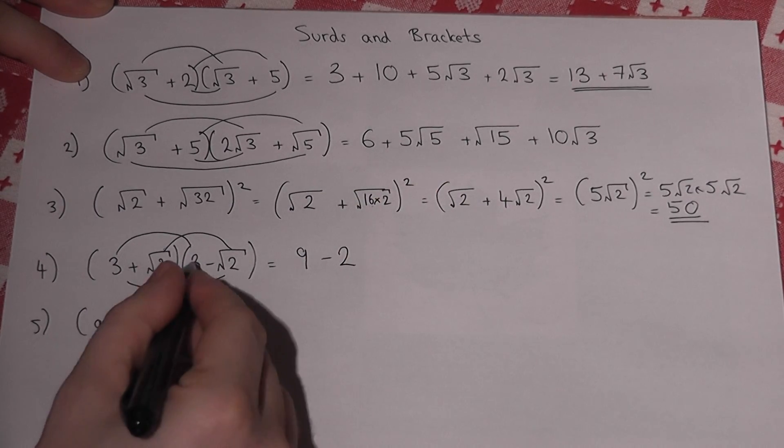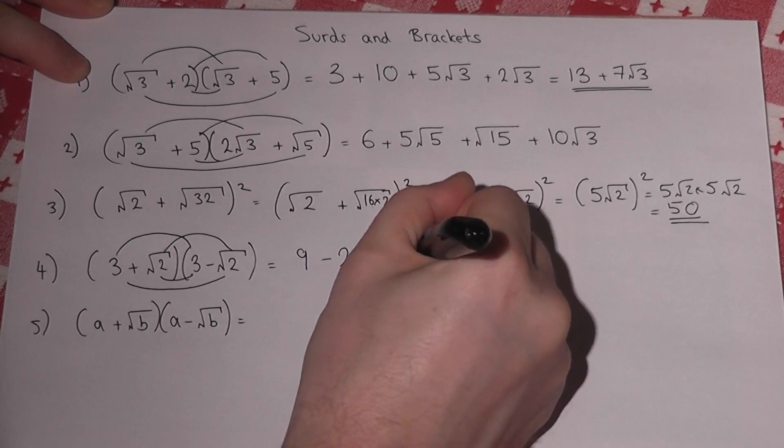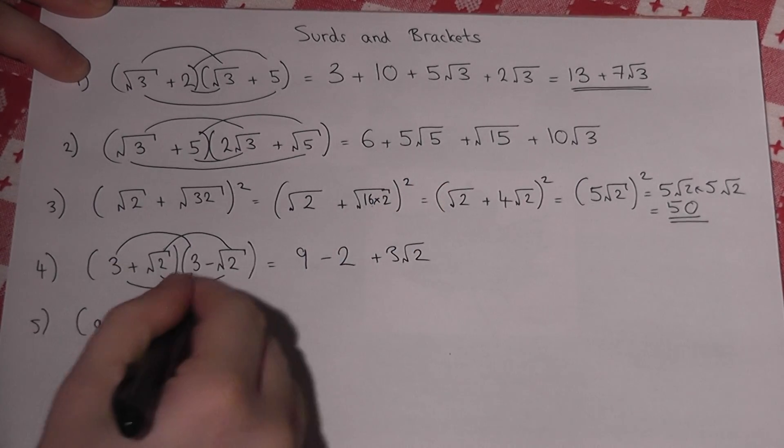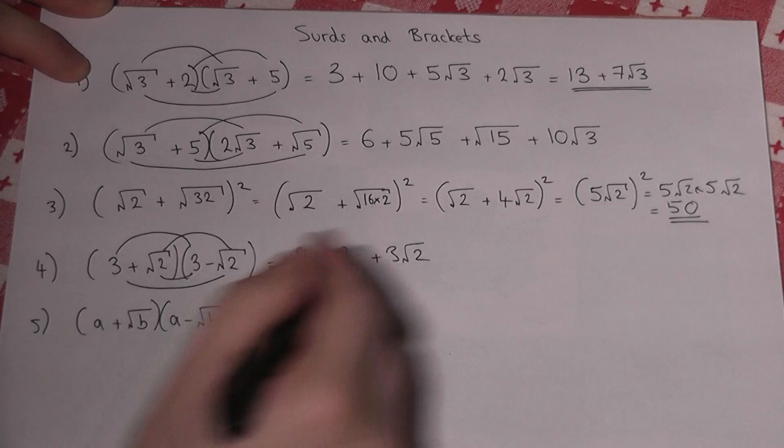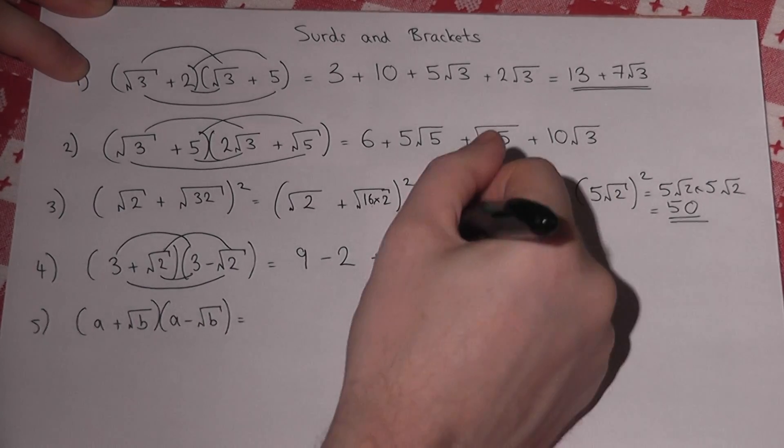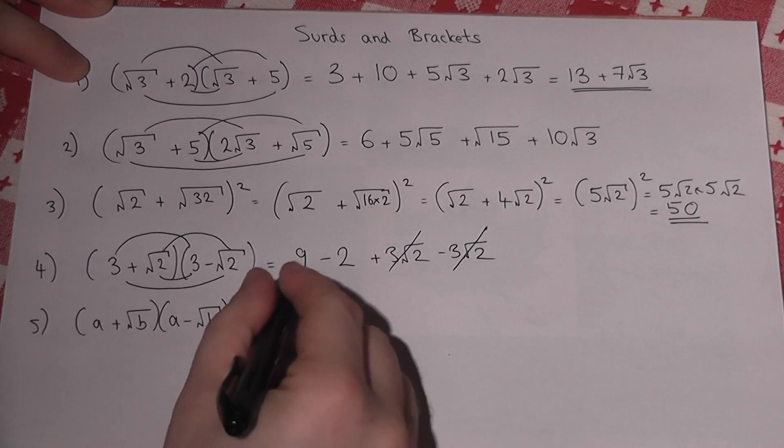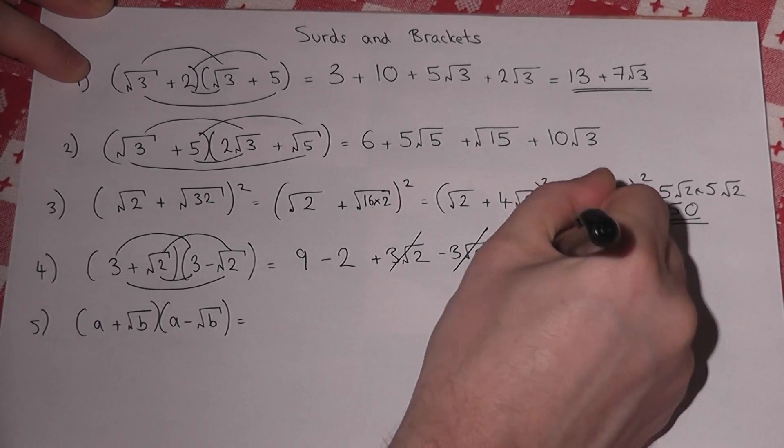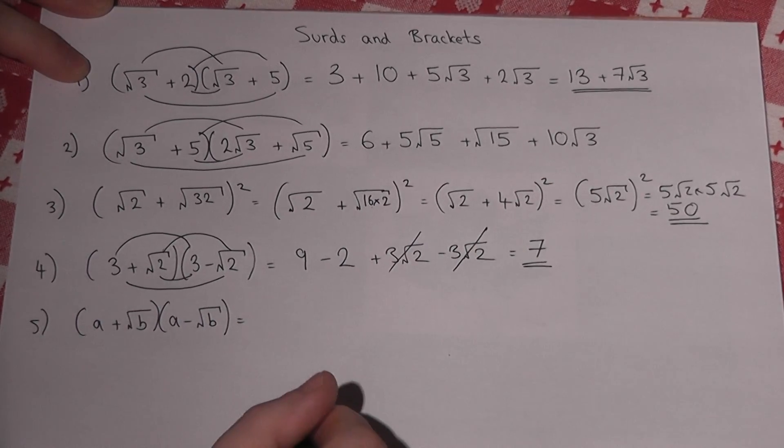This is 3 root 2, and this is minus 3 root 2. Now they cancel off, and 9 take 2 equals 7, so it becomes an integer.